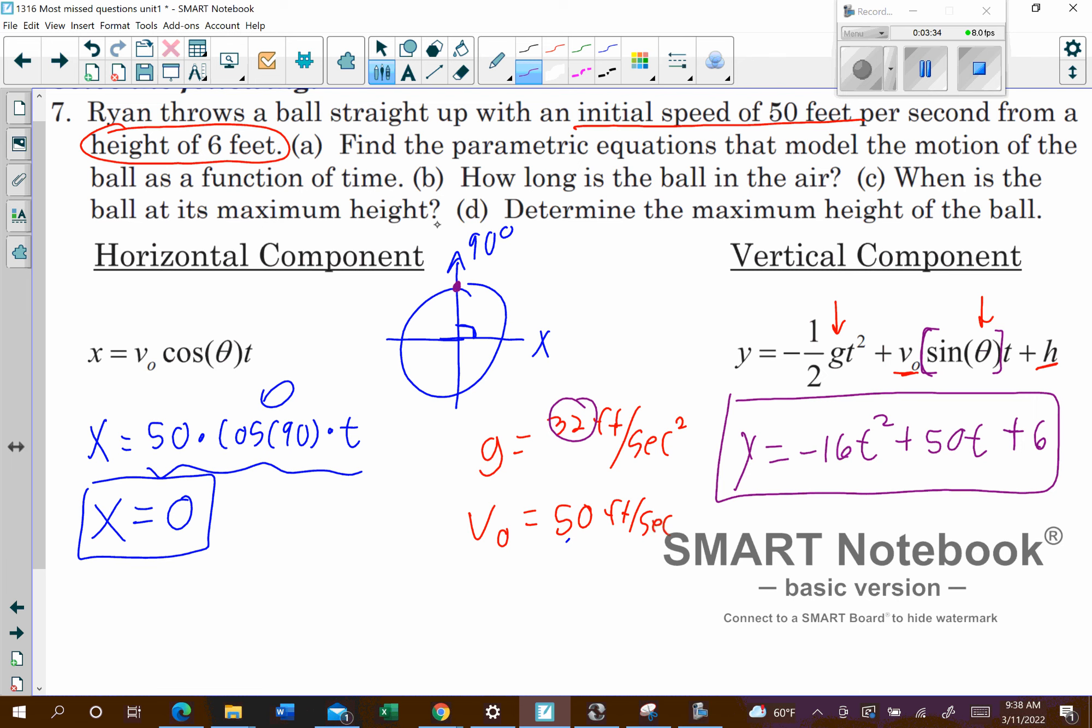When is the ball at its maximum height? For part c, you'll want to do negative b over 2a. That will give you the x value, or your t value. That's what we're calling it here, that would give you t.